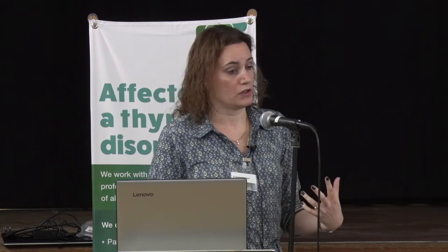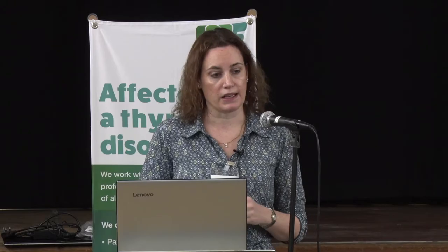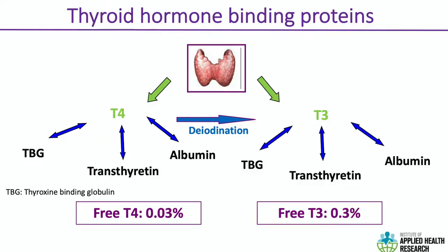Thyroid hormones circulate in the blood bound to proteins. The main protein to which they're bound is thyroxine-binding globulin, or TBG. To a lesser extent, there are other proteins with more non-specific binding. If you compare free thyroid hormone to the total amount of hormone, the free fraction is actually very, very small — the percentages shown demonstrate that the amounts of free hormone in our blood are minuscule.